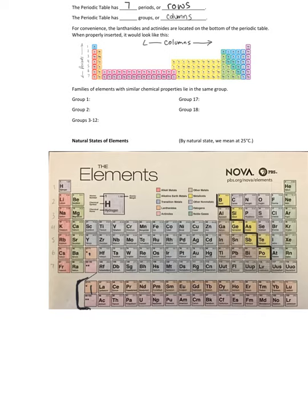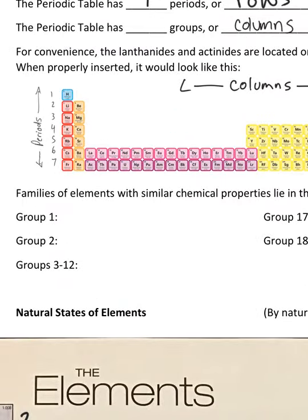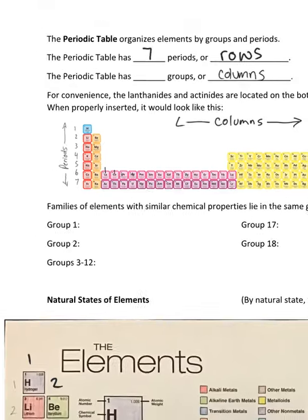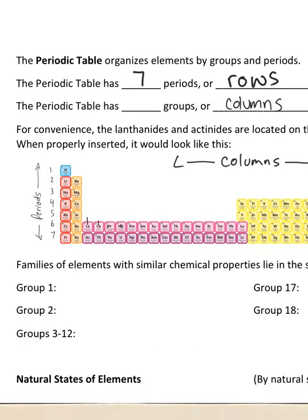That would be like one, two, then this is three through twelve, thirteen, fourteen, fifteen, sixteen, seventeen, and eighteen. We do not count each of these as their own individual groups.